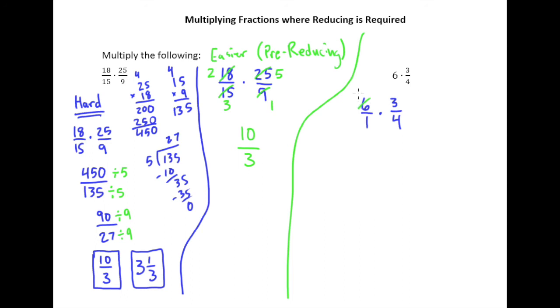And of course, 6 I can divide by 2 to give me 3. 4 I can divide by 2 to give me 2. And then 3 times 3 is 9, 1 times 2 is 2.